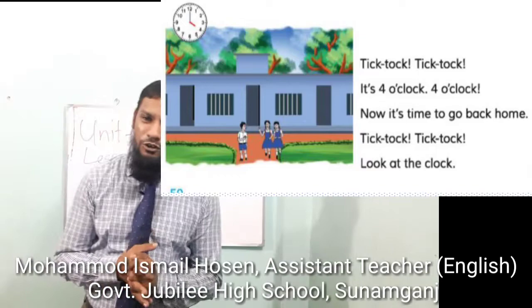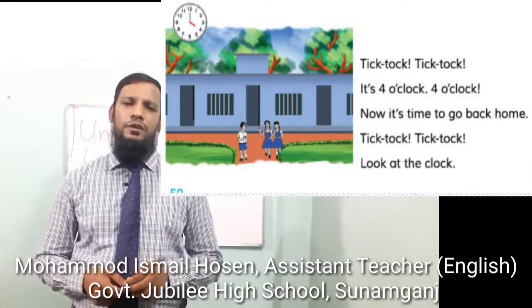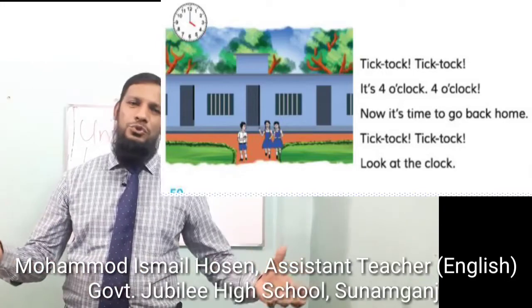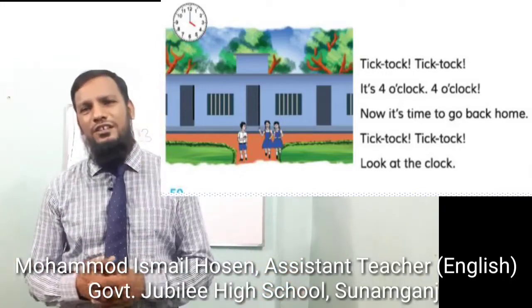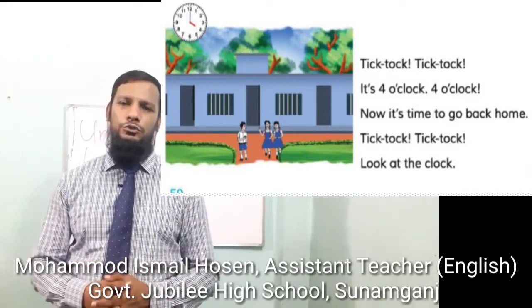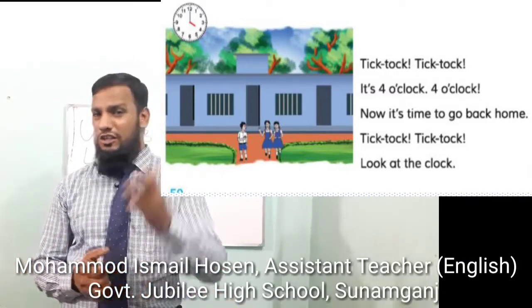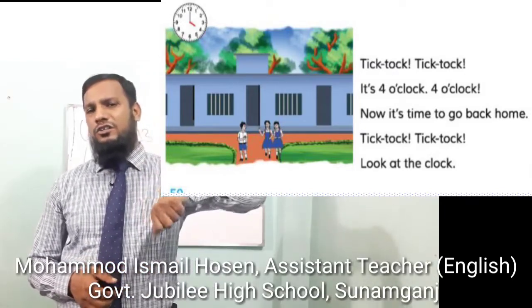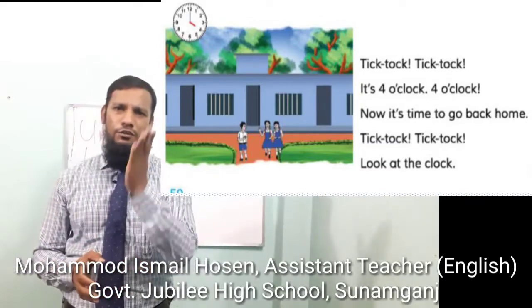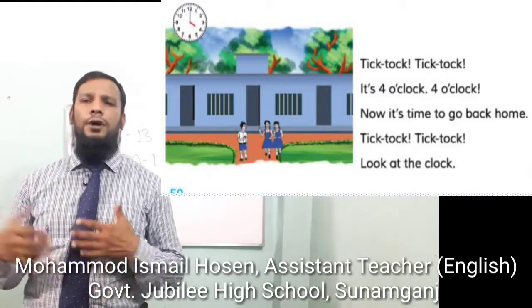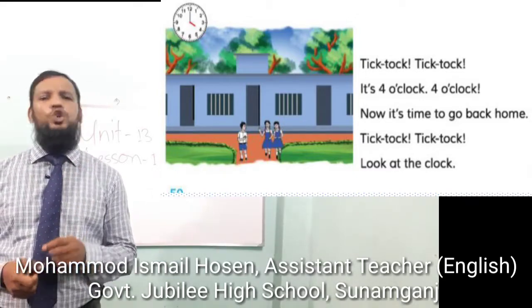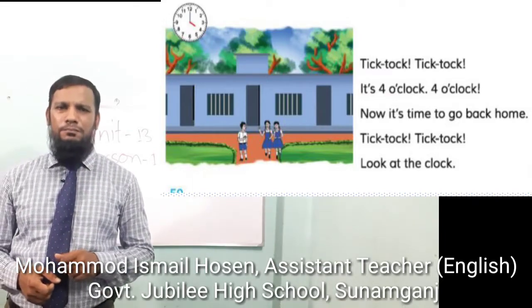Here we have found that in our rhyme, it is said again and again — look at the clock. What can we do by looking at the clock? We can see the time. In this picture you can see that the short hand, which is red, is the hour hand — it's at four. But the long hand, the minute hand, is at twelve.